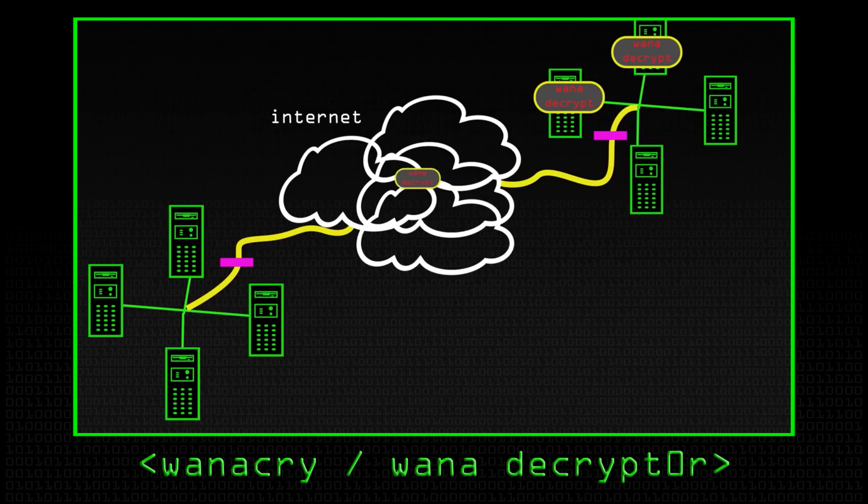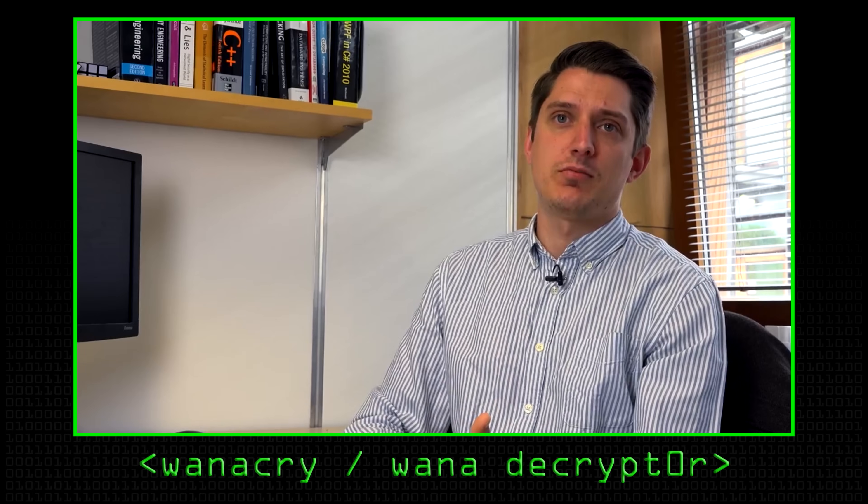Another kind of malware family that is on the edge now is ransomware. As we have heard, there has been the WannaCry attack, for instance, recently. We know that ransomware, what they do is to lock the computer and to encrypt the data.